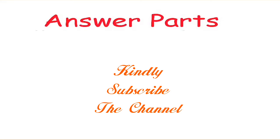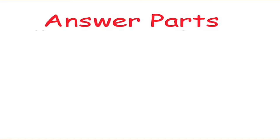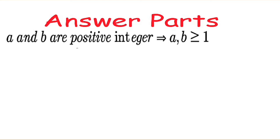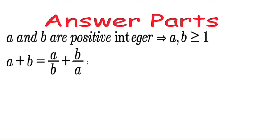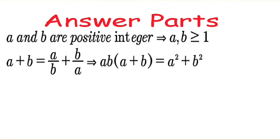Now come to the answer part. As we know a and b are positive integers, then a is greater than or equal to 1 and b is greater than or equal to 1. Now a plus b is equal to a over b plus b over a. Multiplying both sides by ab, that implies ab times (a plus b) is equal to a squared plus b squared.